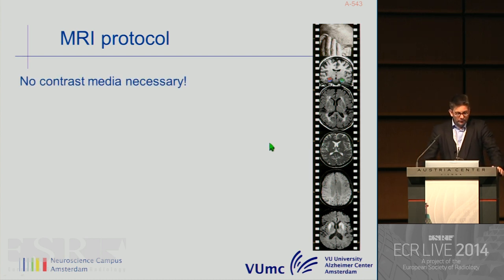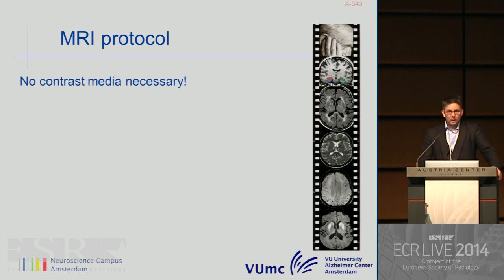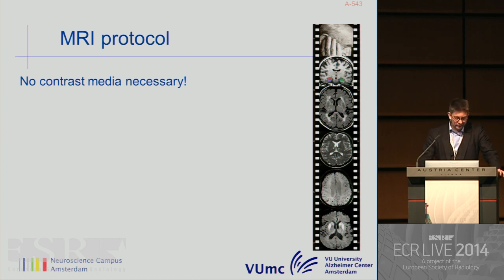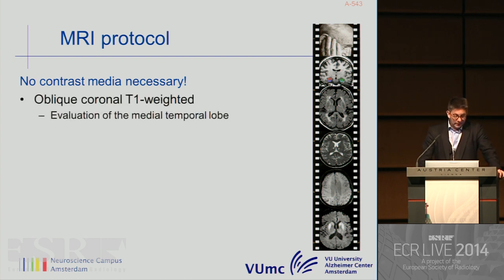Moving from why to use neuroimaging in dementia to how to use neuroimaging in dementia: MR is the modality of choice, and it's very cost-effective in terms of not using contrast, because contrast is not necessary in dementia patients. Only a minority presenting with tumors need contrast media. The workhorse is the oblique coronal T1-weighted image, which is very important to evaluate the medial temporal lobe, particularly the hippocampus.